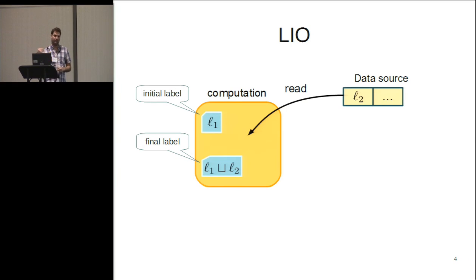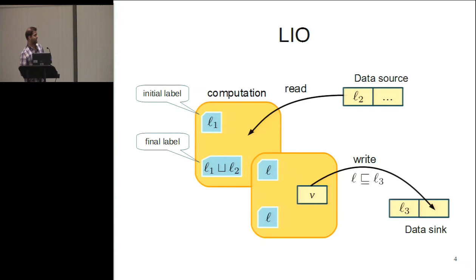By using this current label, we can keep track of what we've read and then potentially prevent write to things that shouldn't be able to get information that is too sensitive for them. When we want to write, we have a value in our computation and we want to write it to some sink, which is also labeled with L3. The idea is that in order for this write to go through, we have to check that the current label at that time is below the target label L3 in this partial order.